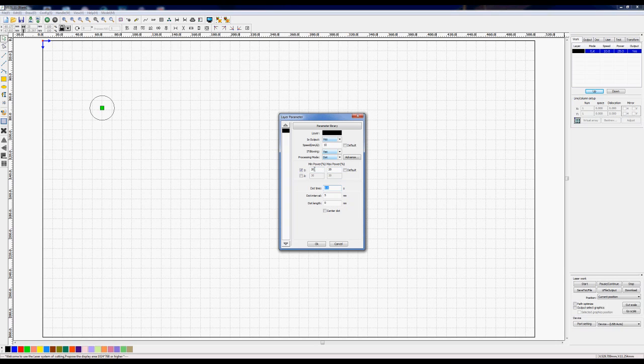We've still got our power, and I'm going to set that power down to 15%. Now the dot type is basically the amount of time that the beam stays on.